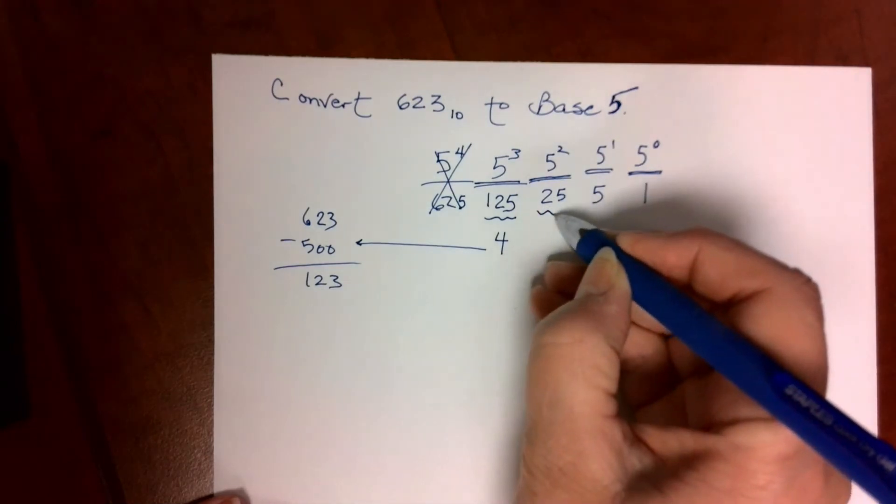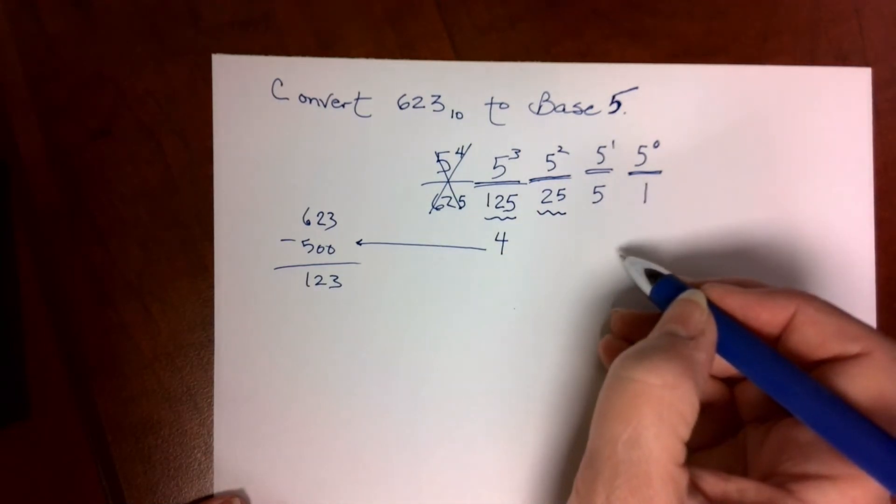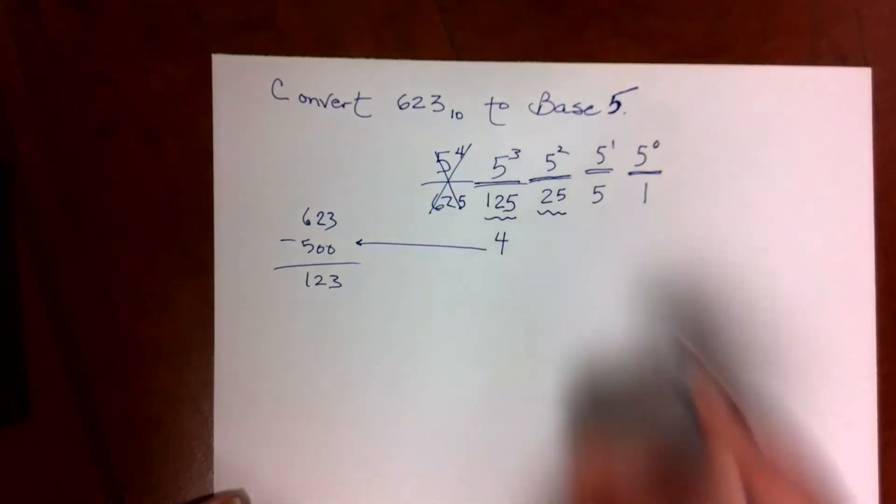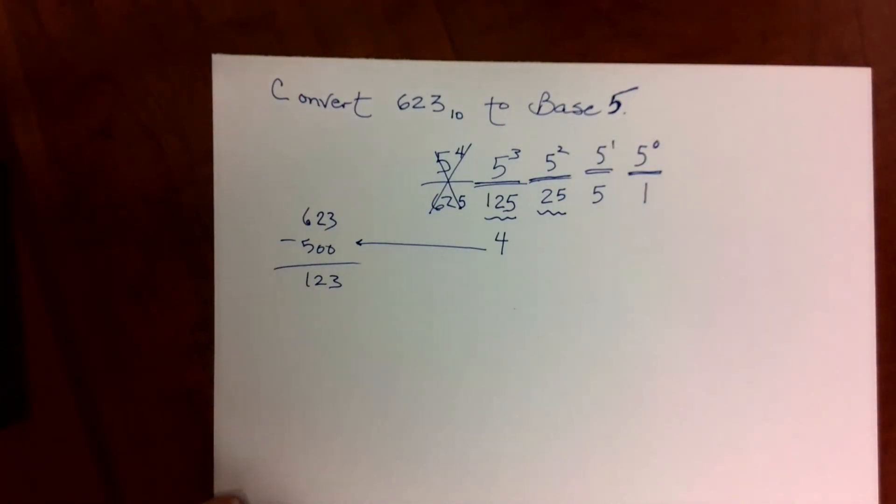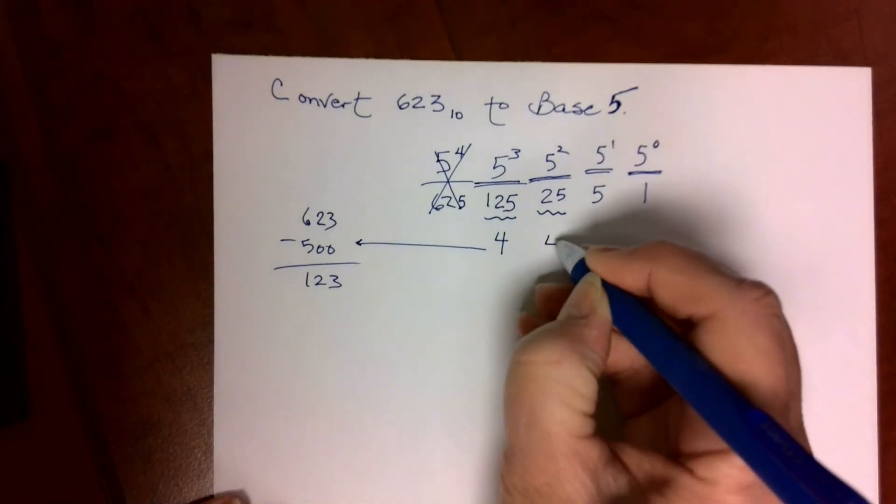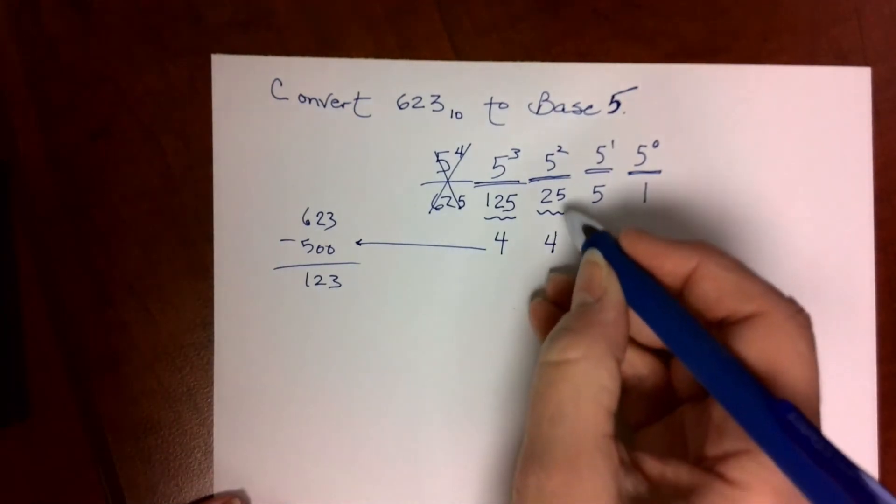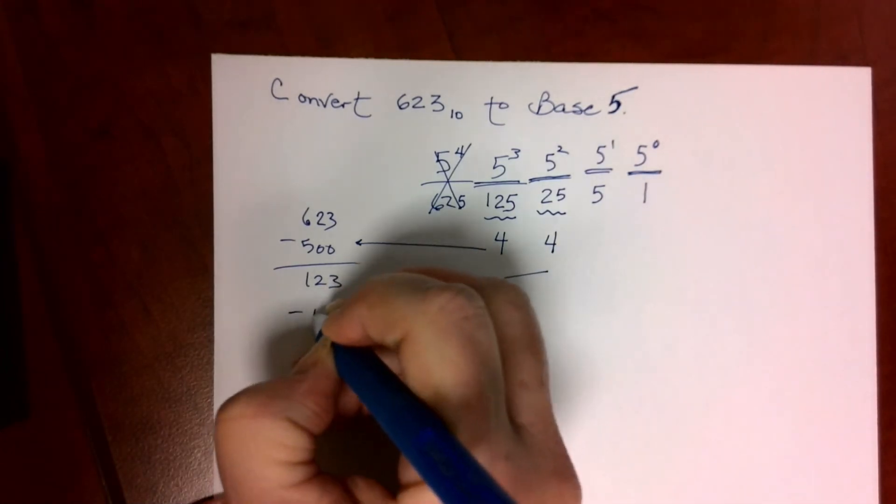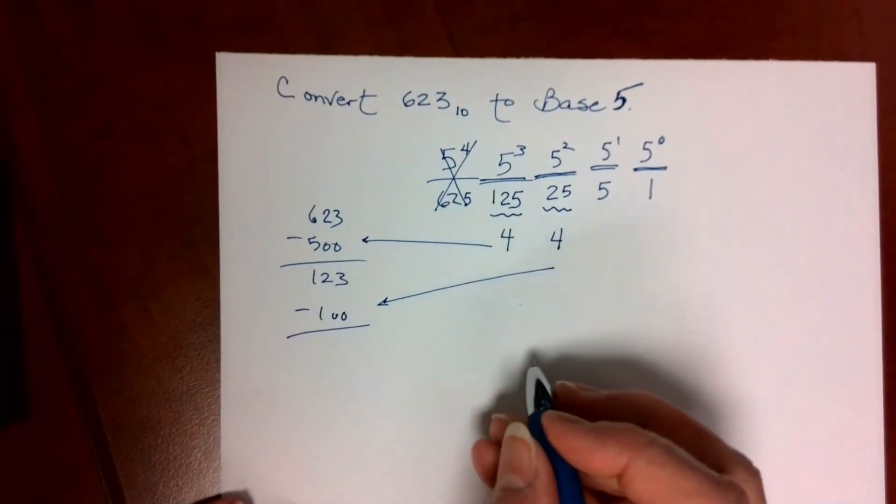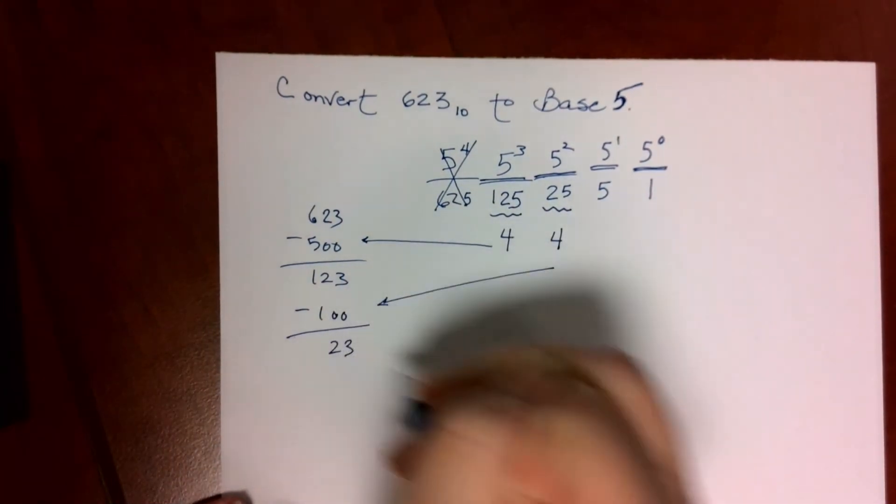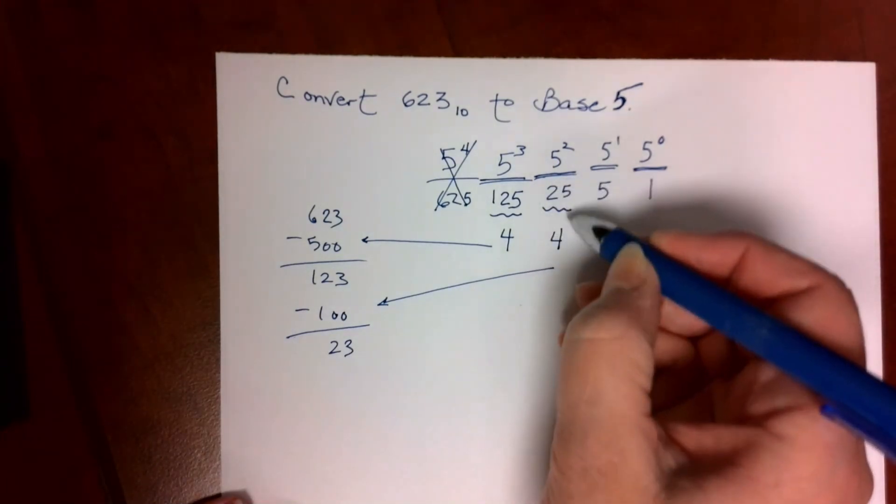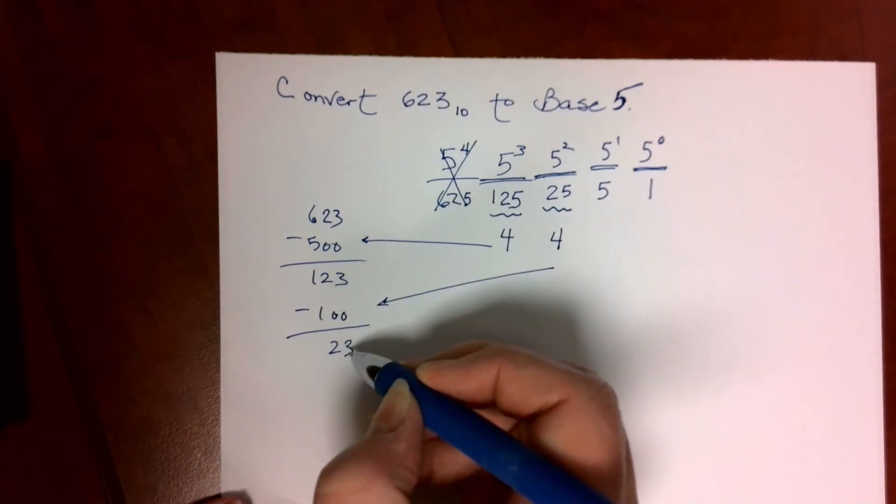4 125s is 500, so I took it away from 623. Now I have 123 left. How many 25s go into 123? So I need to divide 123 by 25, and it goes in 4 times. 4 25s is worth 100, so I'm going to subtract 100 from what's left, and I have 23 left over. I've accounted for 4 25s, 100, taken it away from what remained.